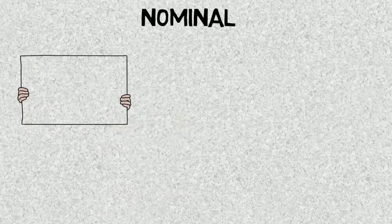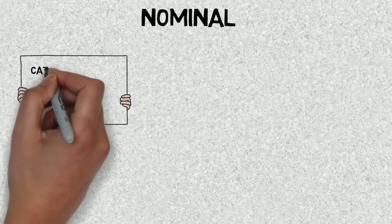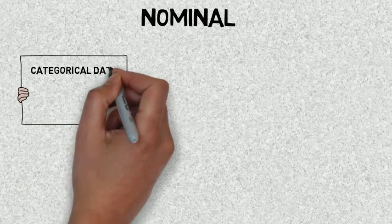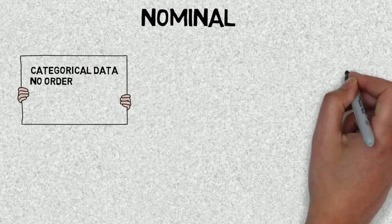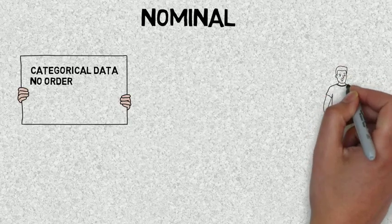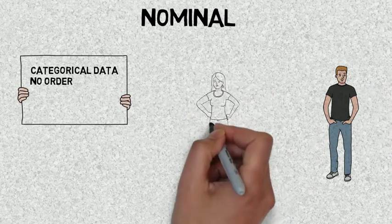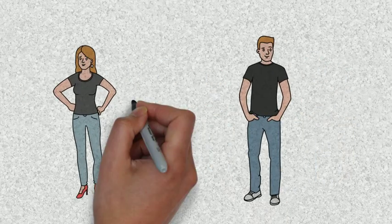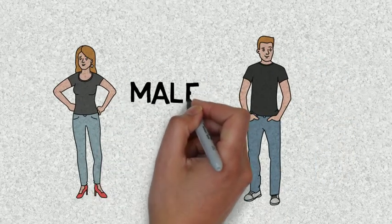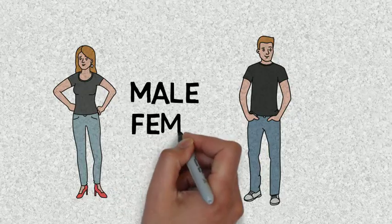Okay, nominal level of measurement. Nominal level of measurement refers to data that is categorical data and has no meaningful order to it. That means if we look at the example here, we've got some data of categories of male or female. I can only give these categories the labels of male and female. There is no meaningful order to these categories.